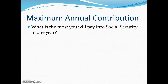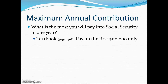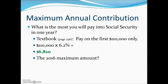Regarding the annual contribution — for illustration purposes using the $110,000 maximum — we take 6.2% times $110,000 to find the maximum Social Security tax an individual would pay in one year. In reality, for 2016, the maximum taxable amount is $118,500, which means $7,347 would be the maximum Social Security tax charged in one year.